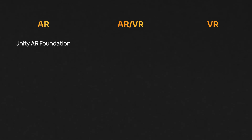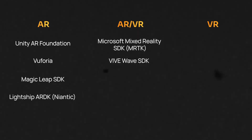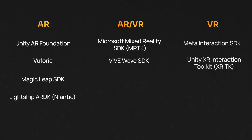With that checklist out of the way, what are the SDKs we're considering? Our focus is developing extended reality experiences — AR or VR — within the Unity game engine. Here's a list of relevant ones as of today. For AR development: Unity AR Foundation, Vuforia, Magic Leap SDK, and Lightship ARDK by Niantic. For AR and VR: Microsoft's Mixed Reality SDK (MRTK) and Vive Wave SDK. For VR development: Meta Interaction SDK and Unity XR Interaction Toolkit (XRITK). Let's look at the characteristics of each, starting with the AR-focused SDKs and then the VR-focused ones.